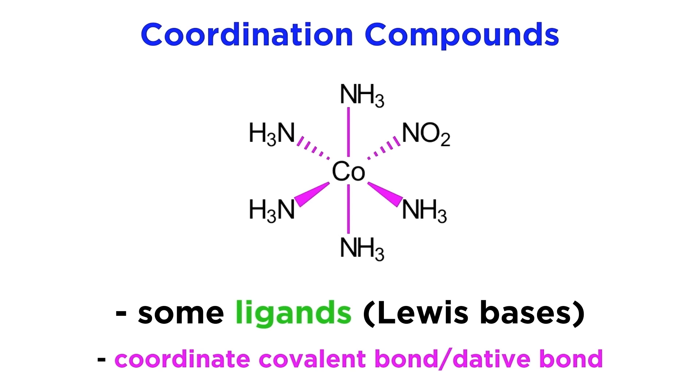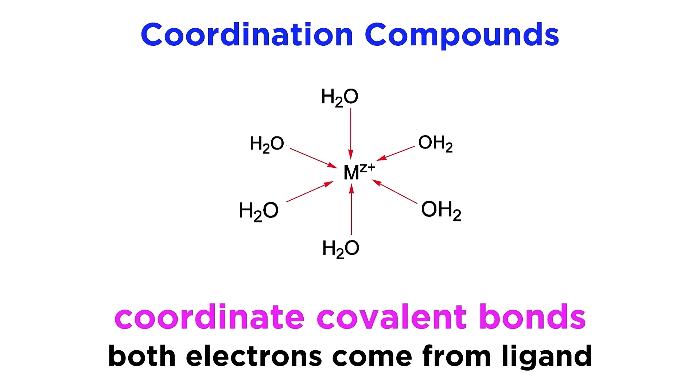These are different from the ionic and covalent bonds that we are used to. With coordinate covalent bonds, both of the electrons in the bond come from a Lewis base and are being donated to a metal center, like the lone pairs on each of these water molecules, which interact with the central metal ion to form this octahedral complex.